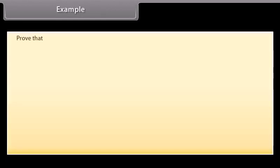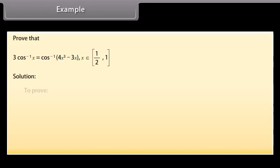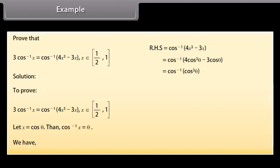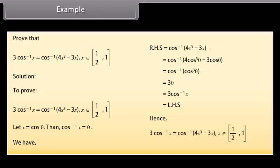Example: Prove that 3 cos⁻¹x = cos⁻¹(4x³ − 3x), for x ∈ [1/2, 1]. Solution: Let x = cos θ, then cos⁻¹x = θ. RHS = cos⁻¹(4x³ − 3x) = cos⁻¹(4cos³θ − 3cos θ) = cos⁻¹(cos 3θ) = 3θ = 3 cos⁻¹x = LHS. Hence, 3 cos⁻¹x = cos⁻¹(4x³ − 3x), for x ∈ [1/2, 1].